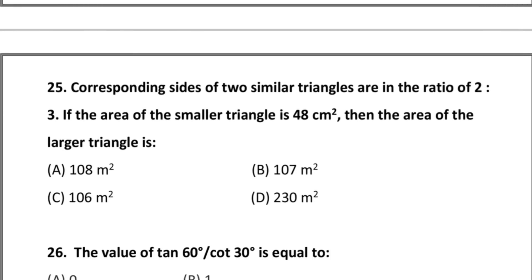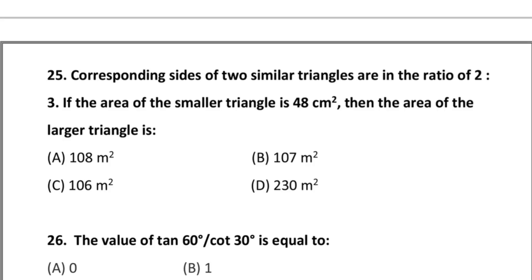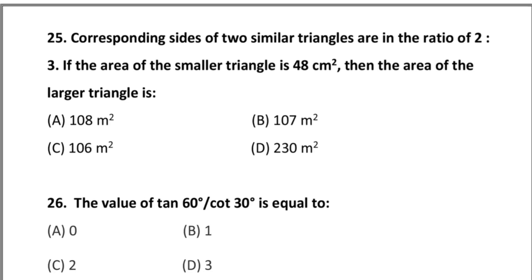Question 25: corresponding sides of two similar triangles are in the ratio 2:3. If the area of the smaller triangle is 48 m², then the area of the larger triangle is — option A: 108 m², option B: 107 m², option C: 106 m², option D: 230 m². Question 26: the value of tan 60° ÷ cot 30° is — option A: 0, option B: 1, option C: 2, option D: 3.